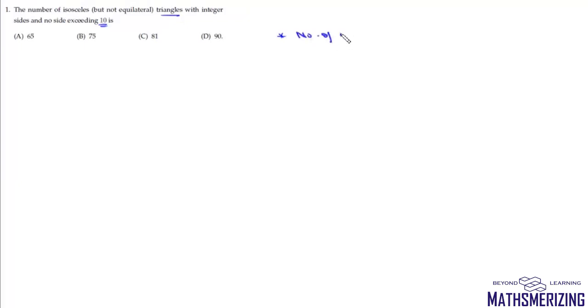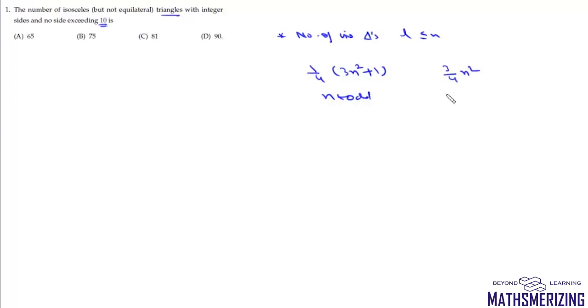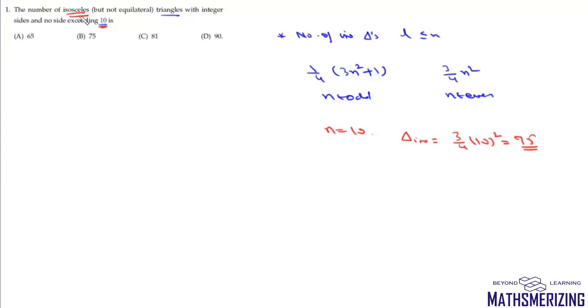We can solve this question in two ways. First, using a direct formula: the number of isosceles triangles with side length not exceeding n is (1/4)(3n² + 1) when n is odd, and (3/4)n² when n is even. Since n = 10 is even, total isosceles triangles = (3/4) × 100 = 75.